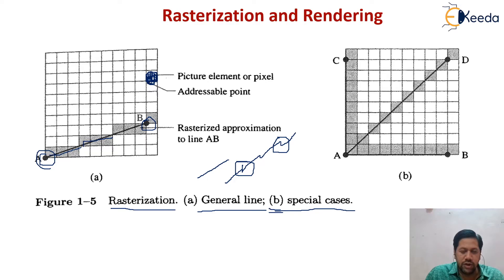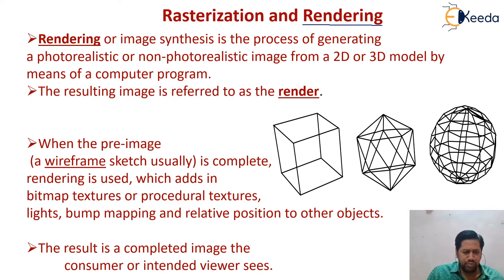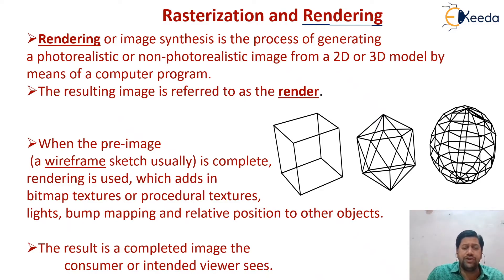Now, the second point under point rasterization is rendering. In unit one, we consider the basics of rendering. Rendering, also known as image synthesis, is the process of generating a photorealistic or non-photorealistic image from a 2D or 3D model by means of a computer program.